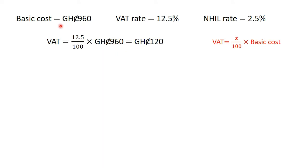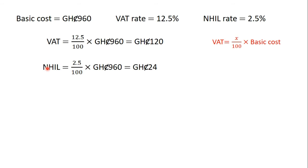So, the basic cost is 960 Ghana cedis and the VAT rate is 12.5%. Therefore, VAT is equal to 12.5 divided by 100, times the basic cost of 960 Ghana cedis. This gives us 120 Ghana cedis. Similarly, the NHIL is equal to 2.5 divided by 100, times 960 Ghana cedis, which gives us 24 Ghana cedis. So, Andrew paid 120 Ghana cedis as VAT and 24 Ghana cedis as national health insurance levy.